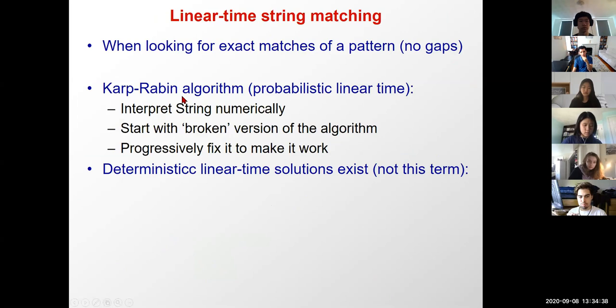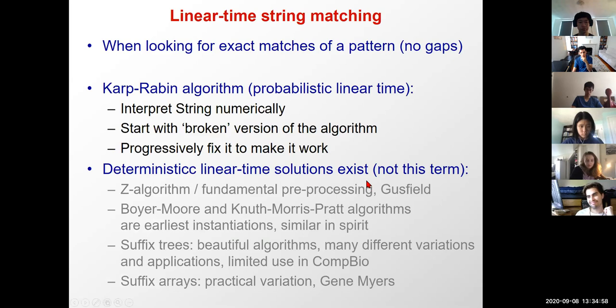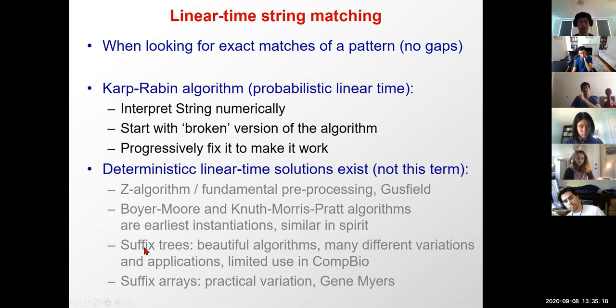The Karp-Rabin algorithm allows you to interpret a string numerically and do the computation in constant time, for exact matching with no gaps. We'll start with the broken version of the algorithm and progressively fix it. We'll also look at deterministic linear-time algorithms: the Z algorithm, Boyer-Moore, suffix trees, suffix arrays, and later the Burrows-Wheeler transform — another variation of the suffix tree concept of storing the self-similarity of a string.